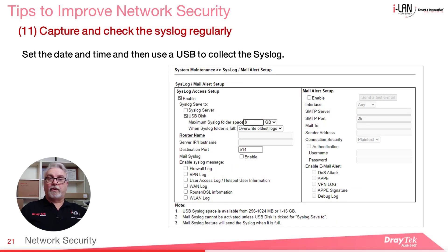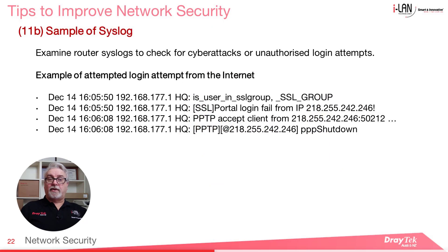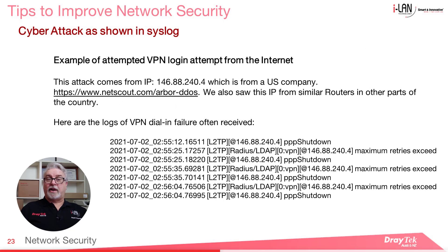Syslog is a very powerful tool that will record a lot of events, and will sometimes show attempts to start a VPN tunnel or the IP address of a possible attacker. A USB flash drive is adequate to collect the logs from the router. If collecting syslogs, ensure that the correct time and date is configured in the router so that syslog entries will have the correct timestamp. It's good practice to check the router syslogs on a regular basis. Here's an example of an attempted login attempt from the internet, and another example of an attempted VPN login attempt — all those maximum retries exceeded messages indicate a possible brute force attack.